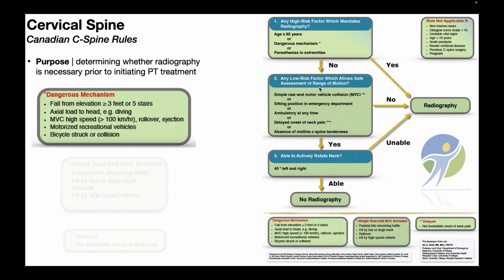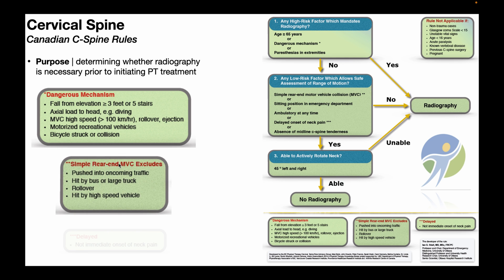A couple of notes on these criteria. Looking at the box at the bottom of the figure, 'simple rear-end motor vehicle collision' excludes more dangerous scenarios: being pushed into oncoming traffic, being hit by a bus or large truck, a rollover, or being hit by a high-speed vehicle. Simple means you're sitting at a complete stop and someone behind you just lightly crashes into your car — a fender bender at maybe five miles per hour. These excluded scenarios are dangerous mechanisms, so 'simple' excludes them.